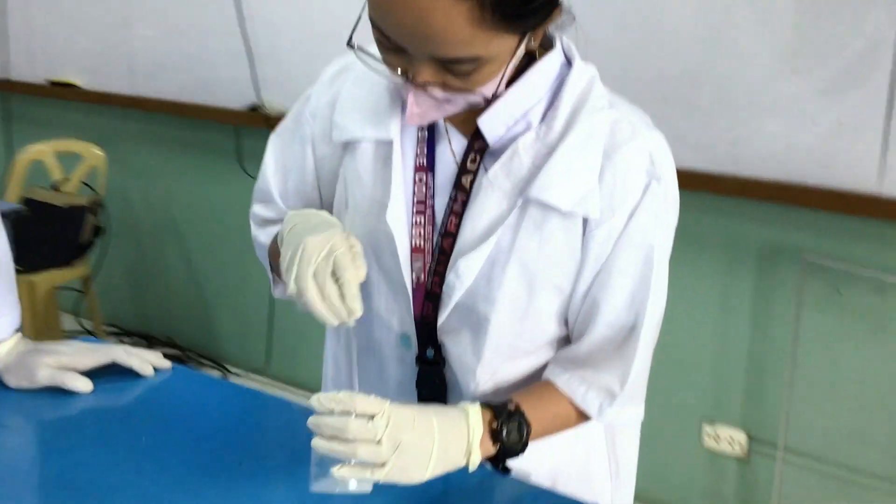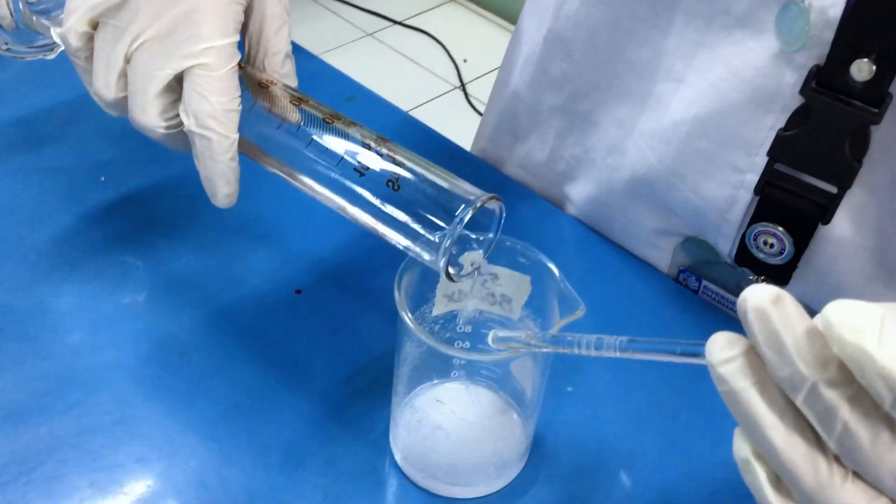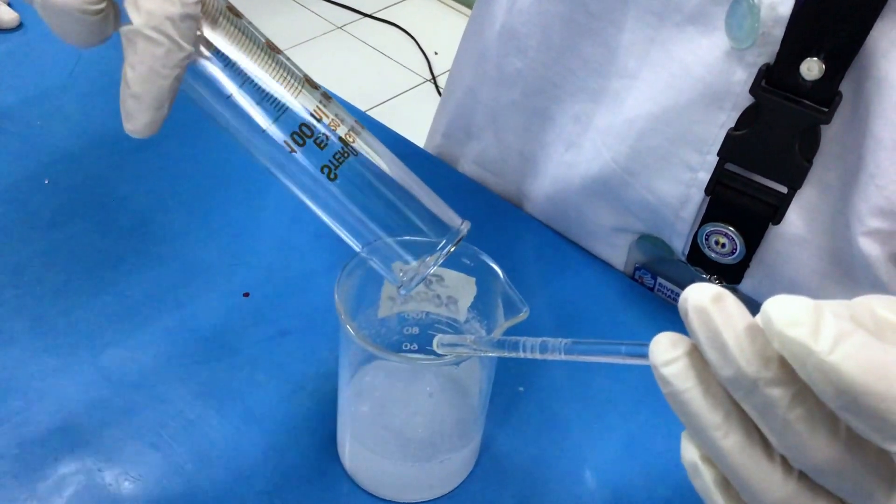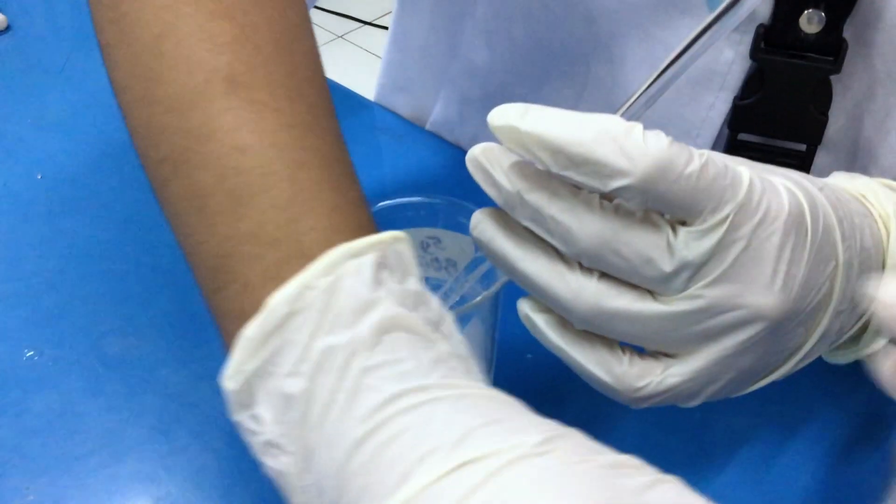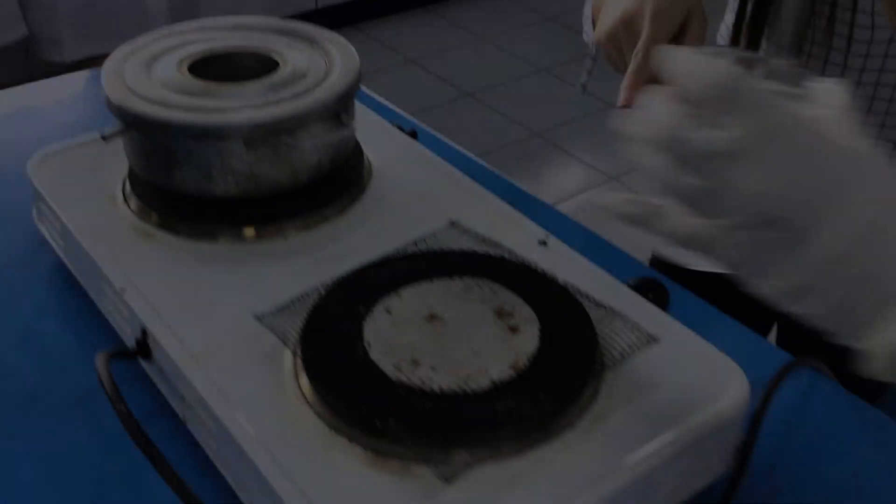Dissolve the borax with distilled water, then stir the solution. Add the dilute sulfuric acid, then continue to stir the solution again. Put the beaker on the hot plate.